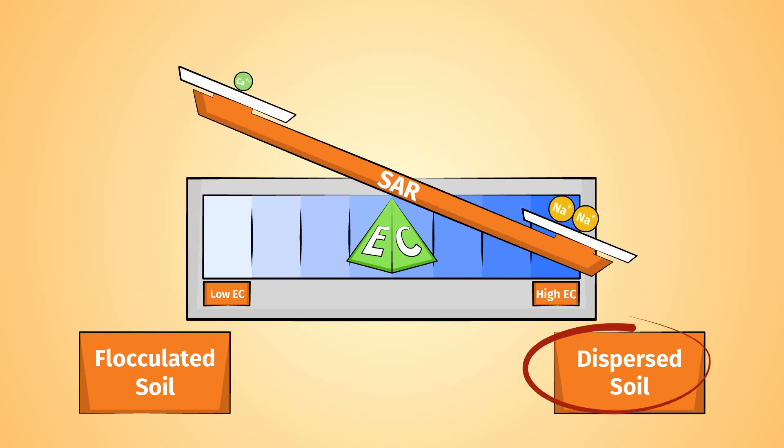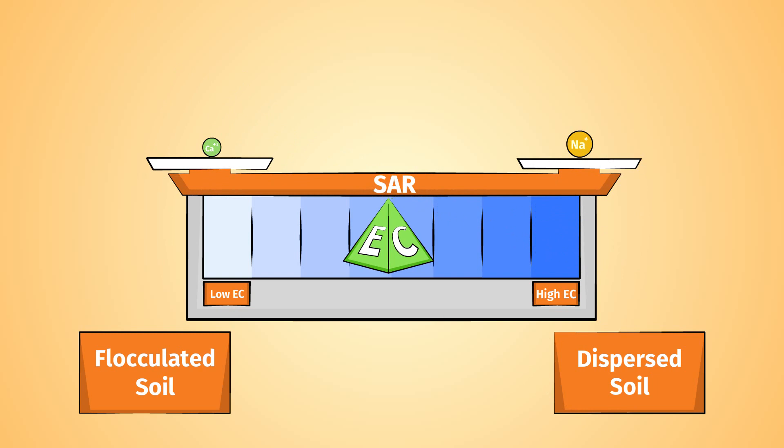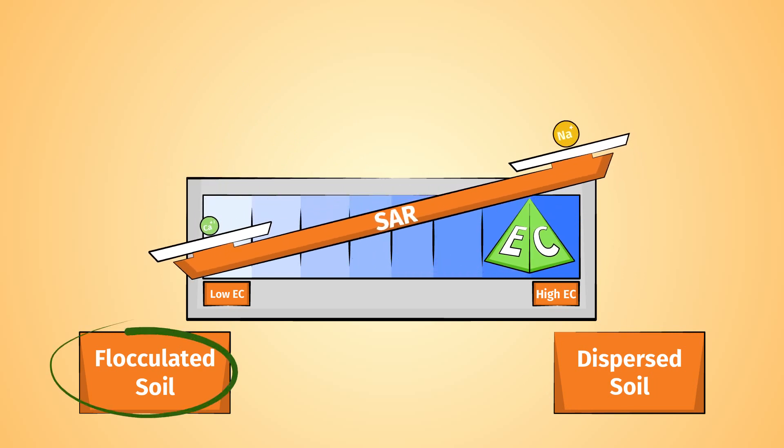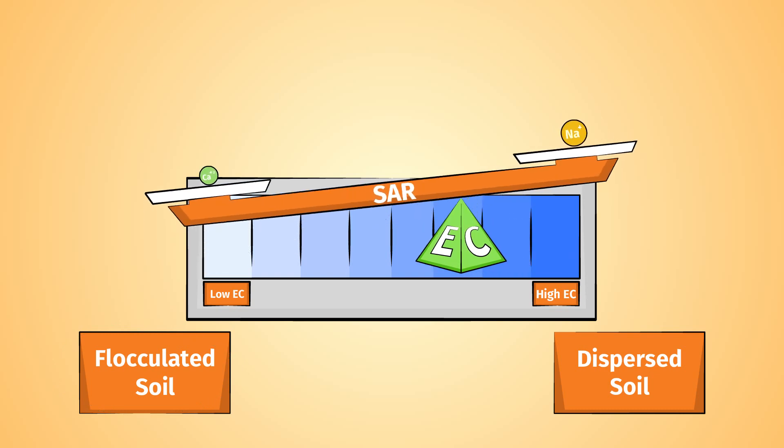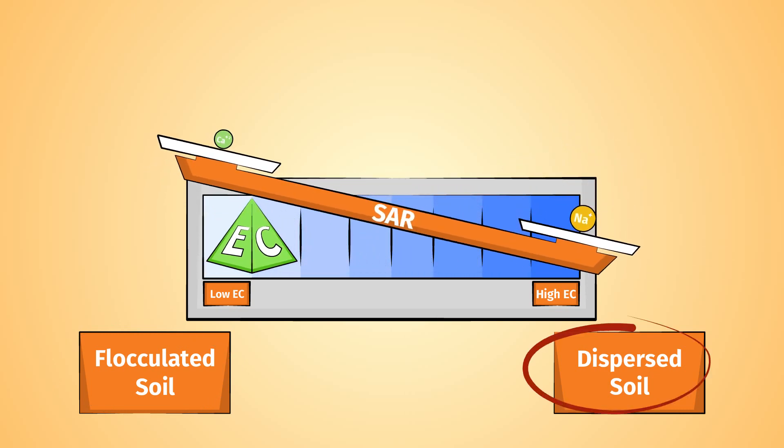Here you would have dispersed soil, higher SAR. If EC is increased, soil particles will flocculate, even if the soil has a lot of sodium. If EC is decreased, soil particles may disperse.